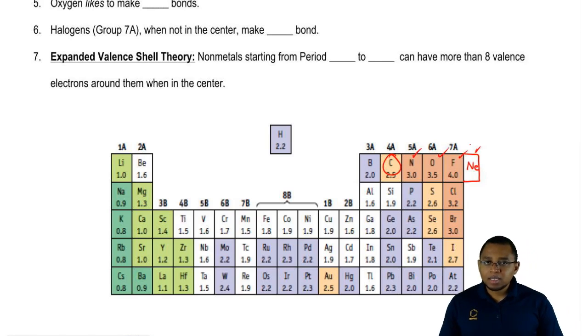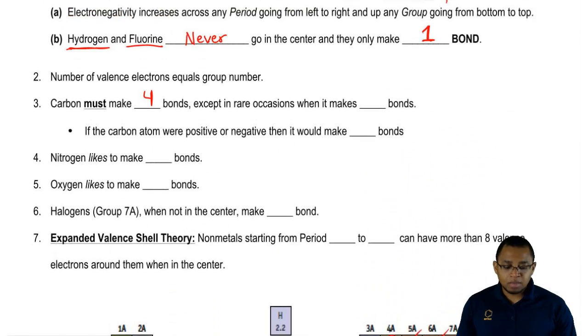Every time we make a bond in a Lewis dot structure, we pick up an electron. Carbon would need to make four bonds in order to gain four more electrons to become just like neon. That's why we say carbon must make four bonds.